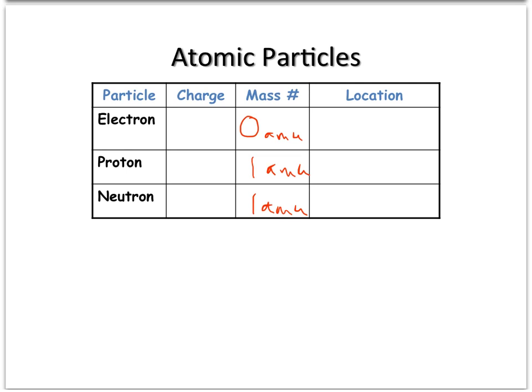So, as far as charges, the electron has a charge of negative one, proton, a charge of positive one, and a neutron has a charge of zero.